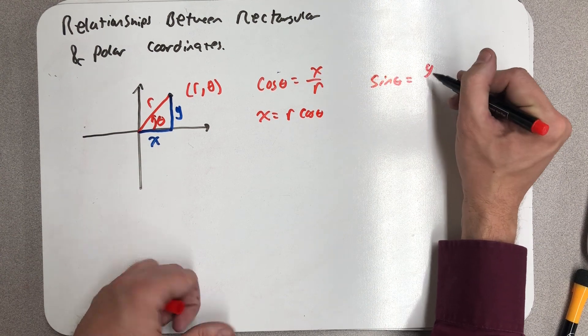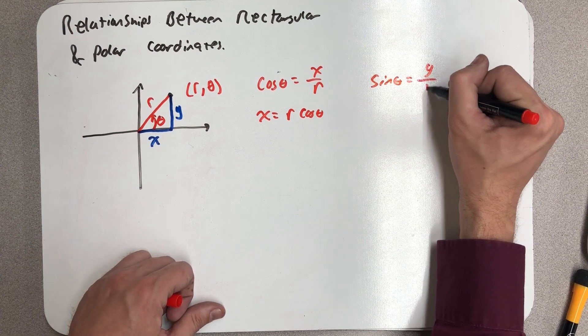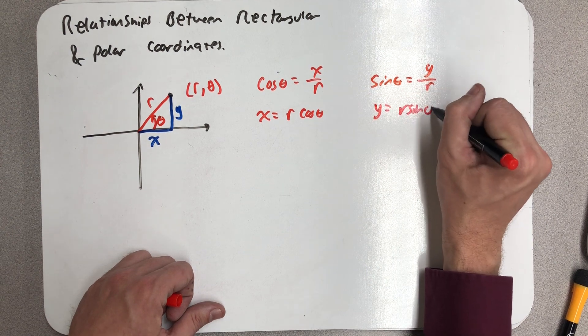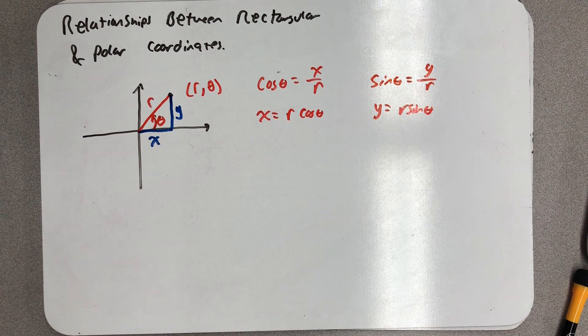Using the same reasoning, sine θ is y over r, making y equal r sine θ. Those are my first two relationships.